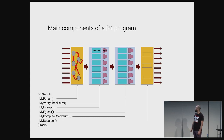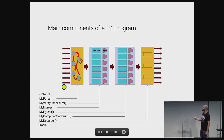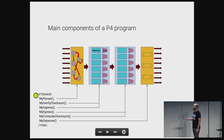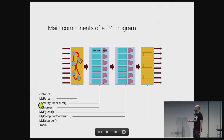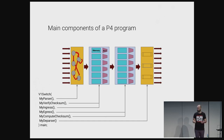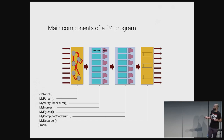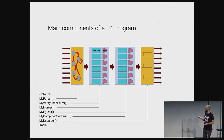Let's look at a P4 program. This one uses the vSwitch model — that's an architecture model. I start off with my parser parsing stuff, then verify the checksum. Once the checksum is good, I go to my ingress pipeline — for example, I want to decrement the TTL in ingress. My egress can do other things. Once that's all done, I compute a new checksum, de-parse the packet, reassemble it all, and ship it out. Very straightforward, very easy to understand.